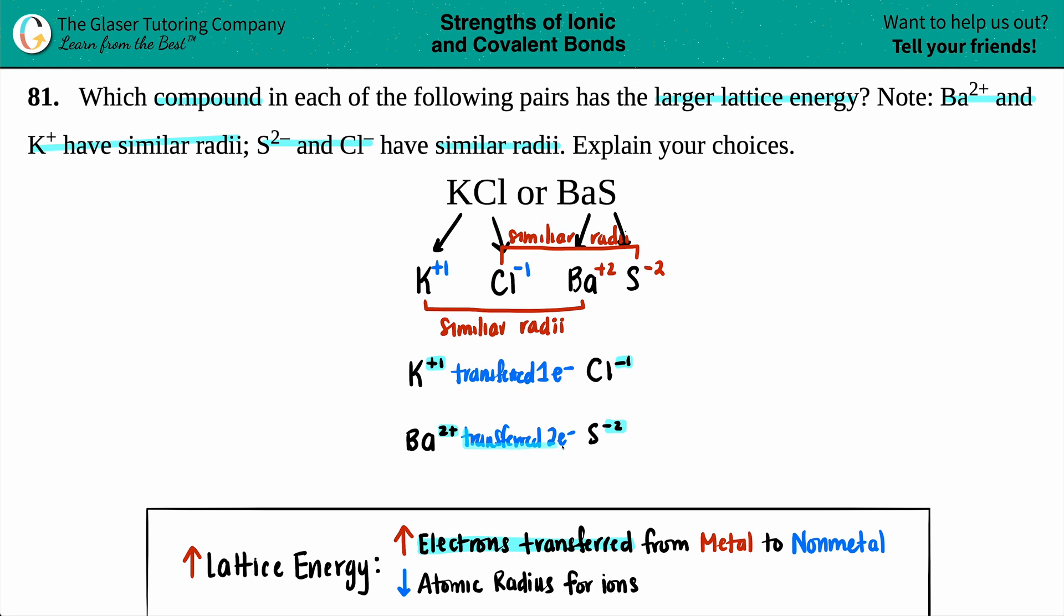BaS transferred two electrons versus KCl transferring one. Two is better than one, so the compound with the larger lattice energy is BaS, barium sulfide. That is the answer.